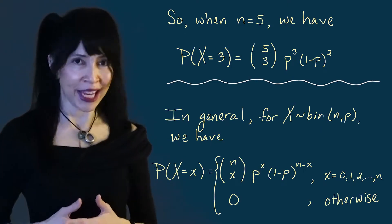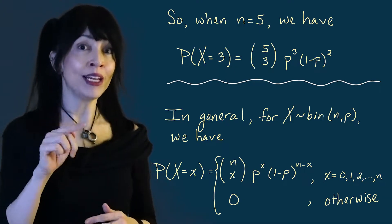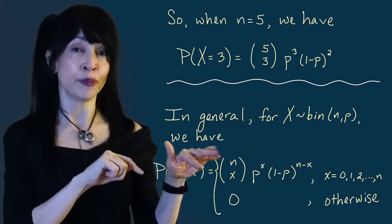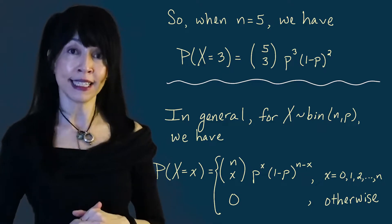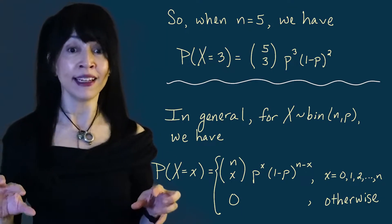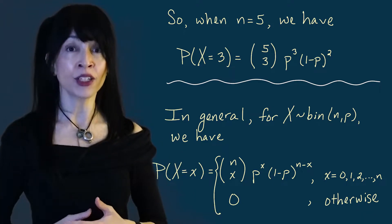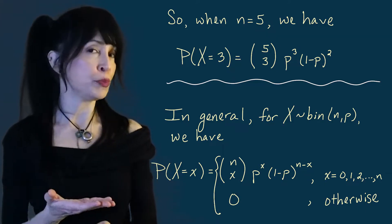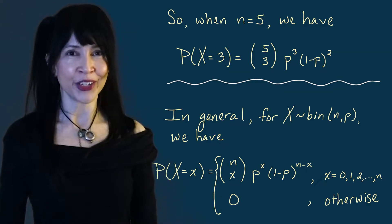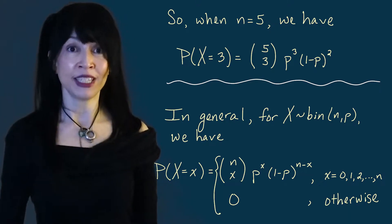To go more generally, let's make n and x general. With n trials and x successes, the probability that X equals little x is n-choose-x times p to the x times (one minus p) to the n minus x. This is the probability mass function for the binomial random variable with parameters n and p. This random variable takes on values zero through n, and the probability of seeing any other value is zero.